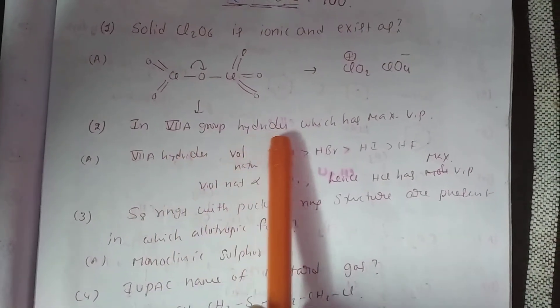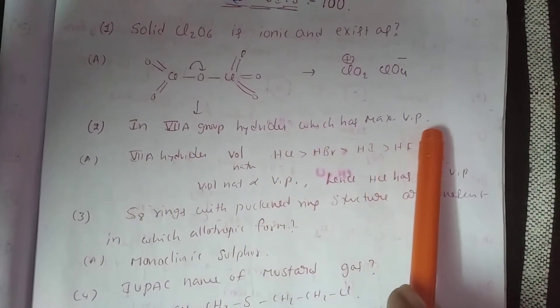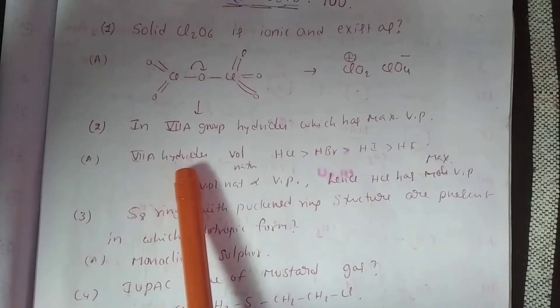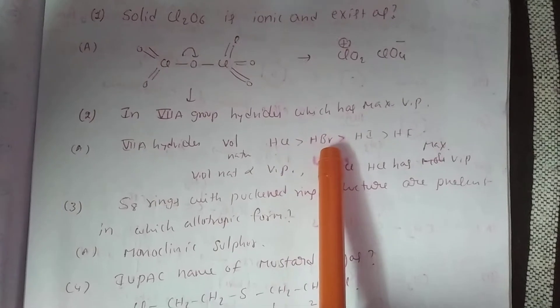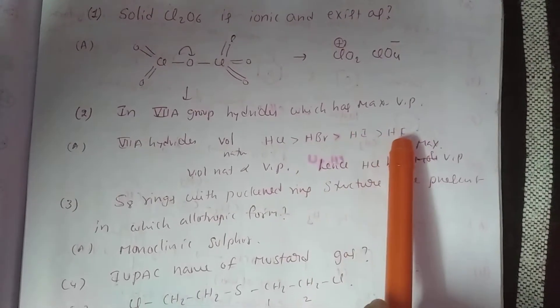In 7A group hydrates, which has maximum vapor pressure? 7A hydrates volatile nature order: HCl greater than HBr greater than HI greater than HF.